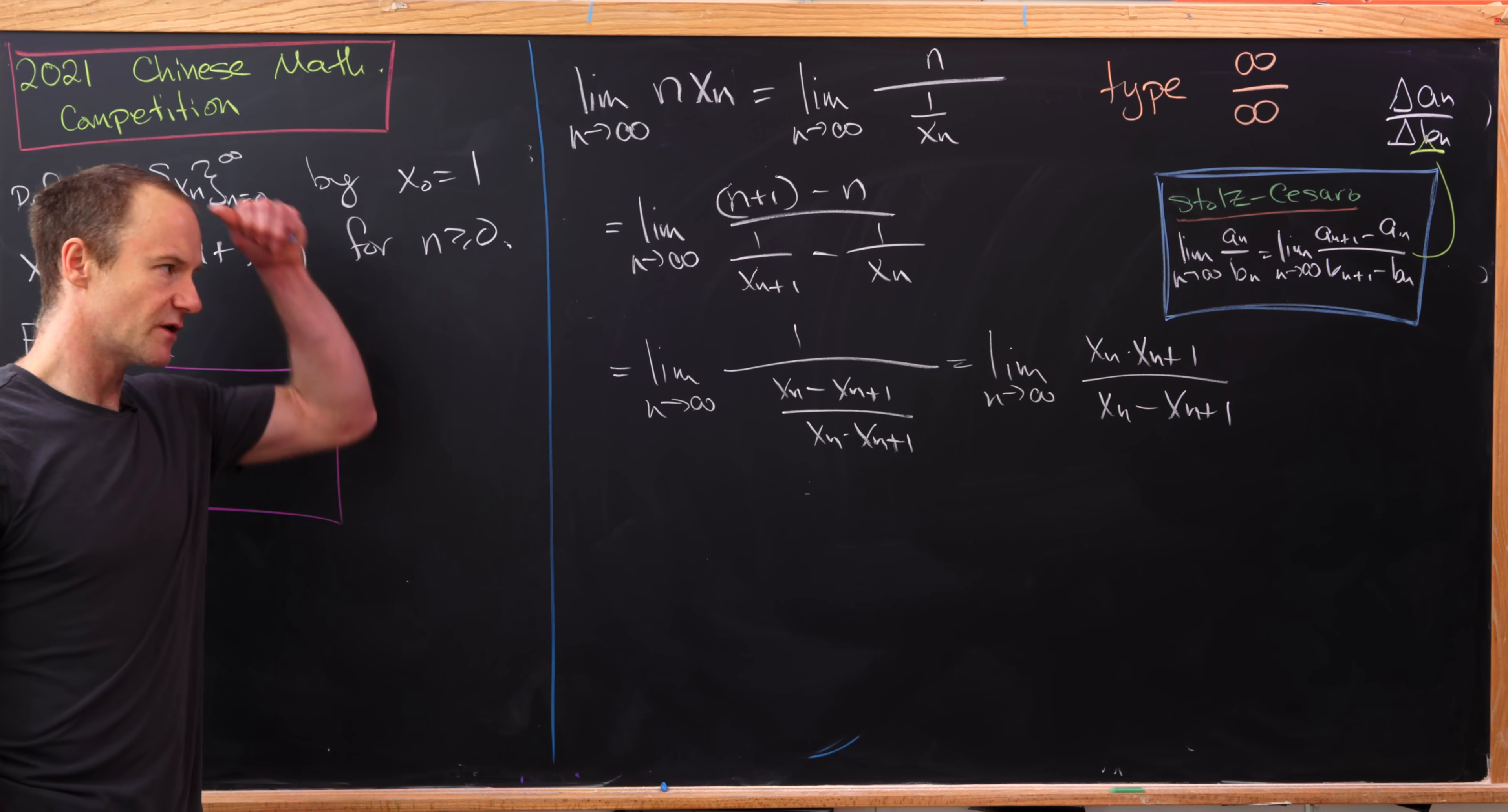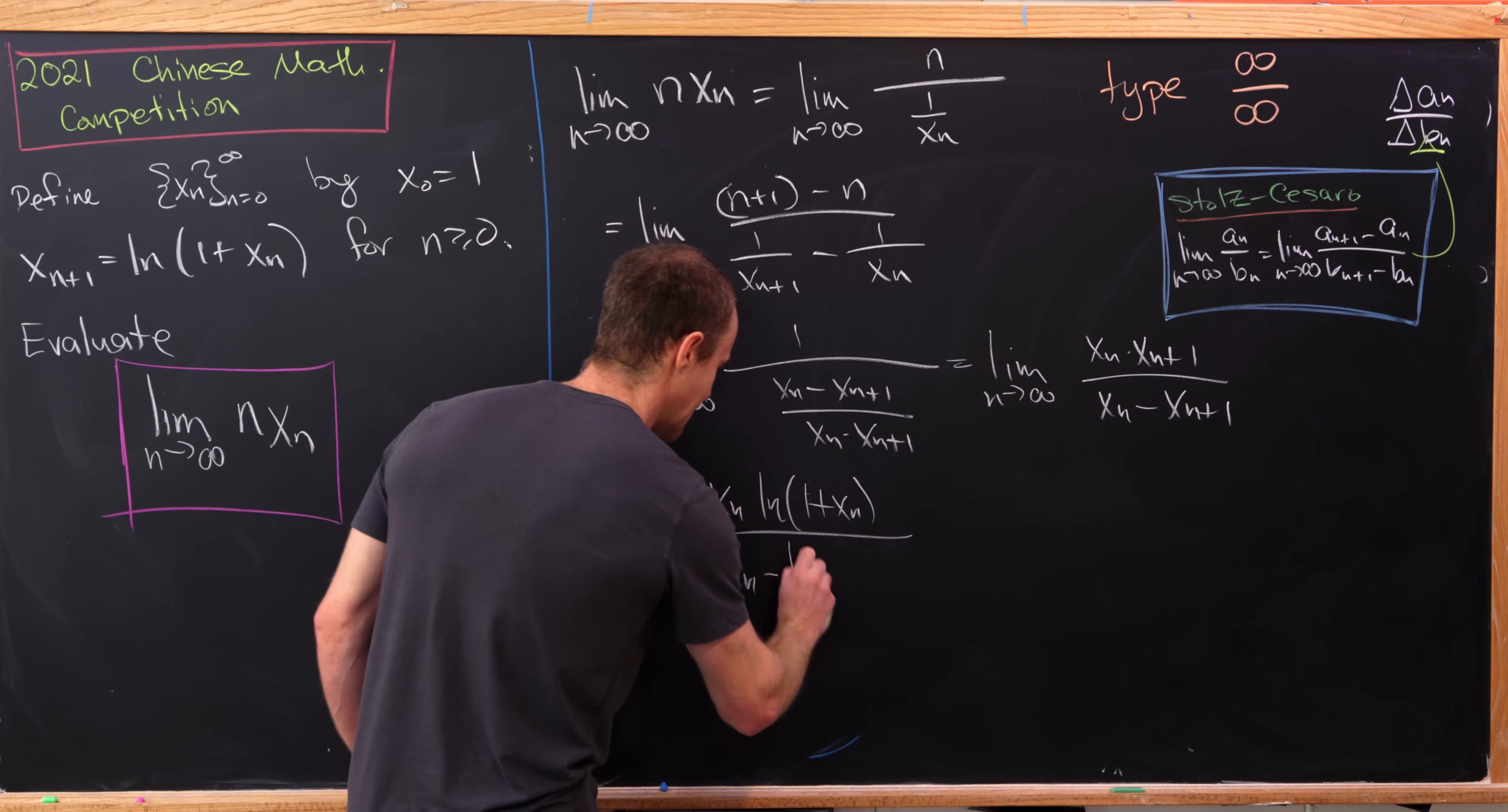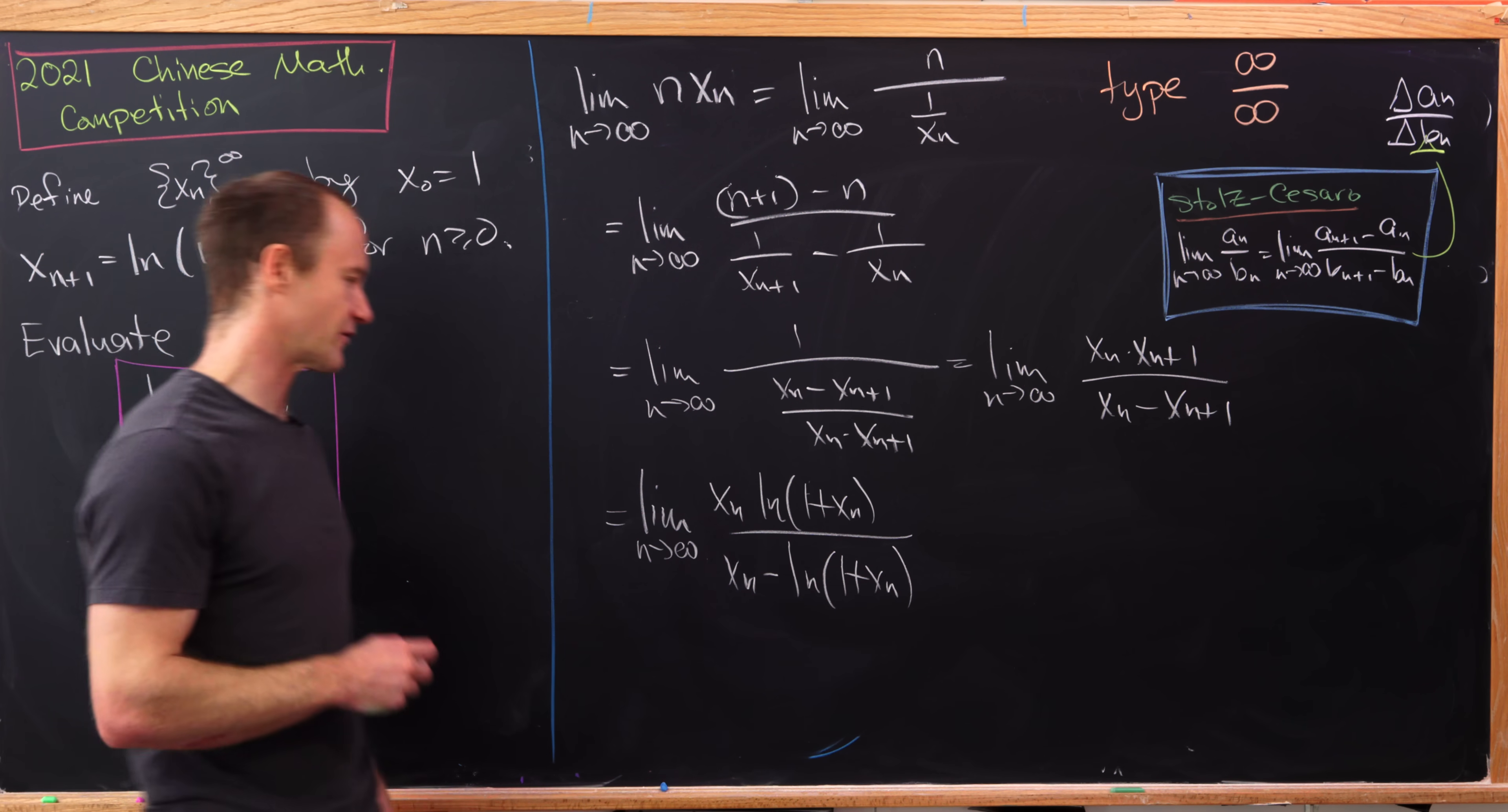But now I'm going to rewrite those x_{n+1}s using our recursion. So that's going to be equal to this limit as n approaches infinity of x_n times the natural log of 1 plus x_n over x_n minus the natural log of 1 plus x_n. But now observe that we've got this sequence that's composed inside of a continuous function in the numerator and a continuous function in the denominator, and we've got exactly the same place in the sequence, the nth place, existing everywhere.